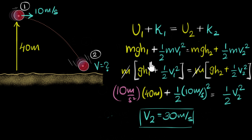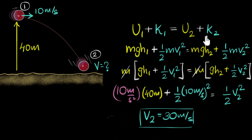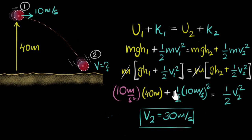In general, whenever we are solving problems that involve heights and speeds — or positions and speeds — energy conservation is a great way to solve them. However, the drawback is that you cannot calculate time. If asked how long it takes the ball to travel from one point to another, you can't use this method because there is no time in this equation. It's only useful when you don't have to worry about time.